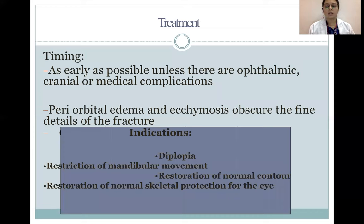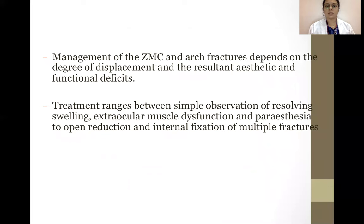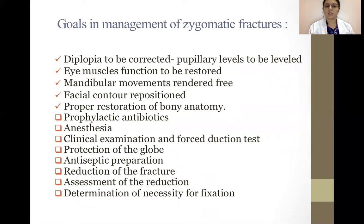Treatment should be carried out as early as possible unless there are ophthalmic, cranial or medical complications. Periorbital edema and ecchymosis can obscure the fine details of the fracture. Ideal indications for treatment include diplopia, restriction of mandibular movements, restoration of normal contour, and restoration of normal skeletal protection for the eye. Management of ZMC and arch fractures depends on the degree of displacement and resultant aesthetic and functional deficits, ranging from simple observation to open reduction and internal fixation. Goals include correcting diplopia, restoring eye muscle function, restoring mandibular movements, facial contour repositioning, proper restoration of bony anatomy, along with prophylactic antibiotics, clinical examination and forced reduction tests, protection of the globe, antiseptic preparation, reduction of the fracture, assessment of reduction, and determination of necessity for fixation.